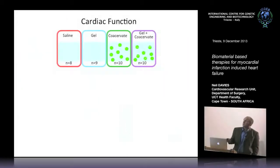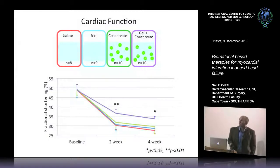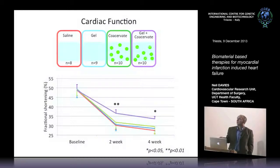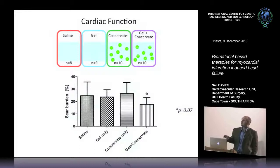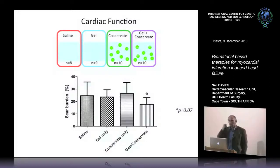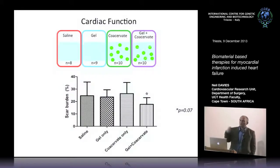In the cardiac function study with four groups — saline, gel, coacervate, and gel plus coacervate — when you look at fractional shortening, the saline, gel, and coacervate groups are essentially the same with no improvement. But when you combine gel and coacervate, you see a significant improvement in function persisting out to four weeks. Infarct size was reduced with gel plus coacervate but only reached P equals 0.07 — we should have done more rats. We're now looking for presence of C-kit cells and increased angiogenesis.